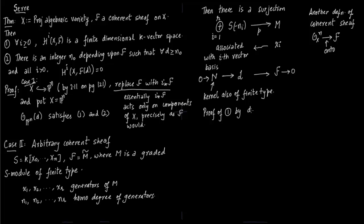We prove part 1 by descending induction on i. First, for i greater or equal to n+1, H^i(F) is zero because the ring S only has n+1 variables. When you form the Čech complex it will automatically become zero, making cohomology groups zero.